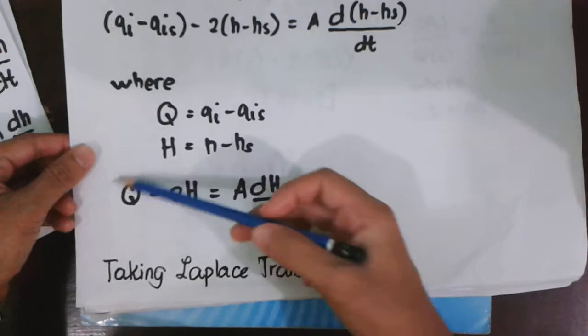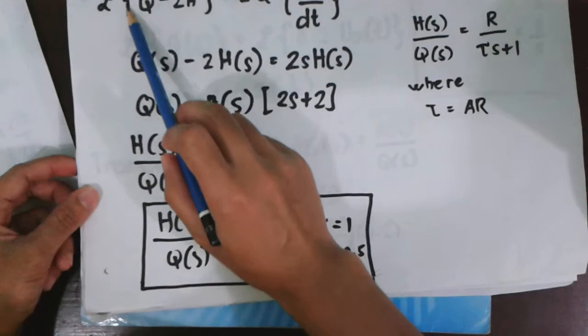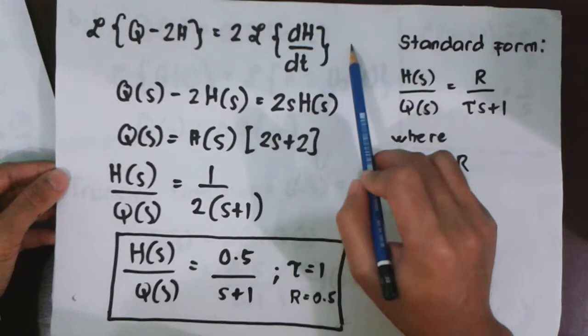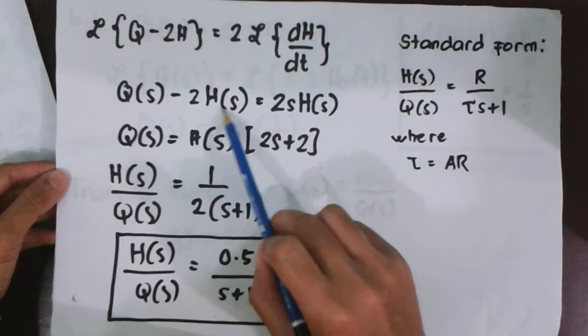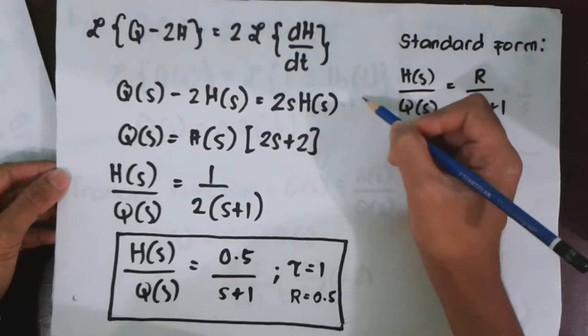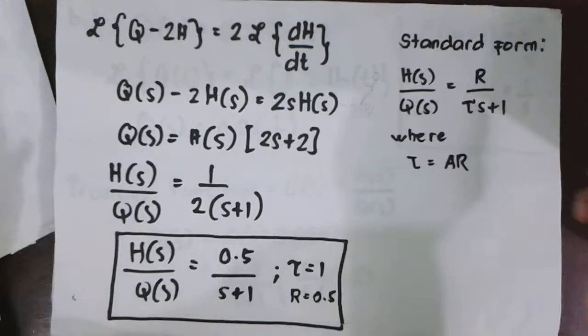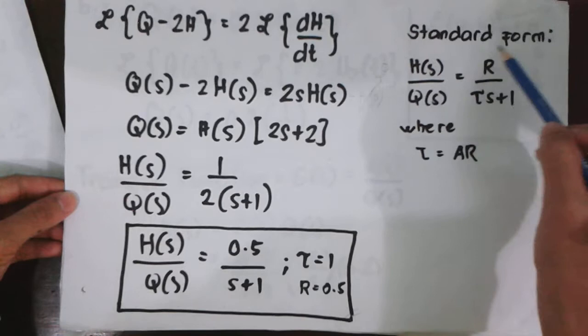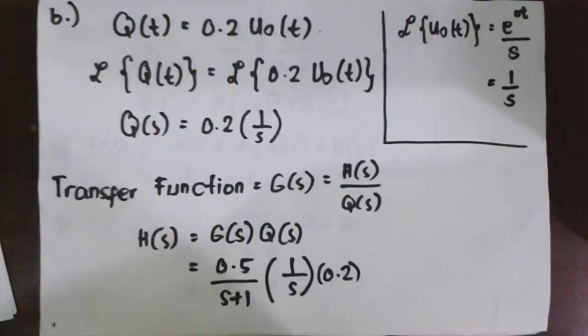Taking the Laplace transform with this equation, we arrive at this. The Laplace of Q minus Laplace of 2H is equal to 2 times Laplace of dH over dt. The Laplace of Q is equal to Q(s) and Laplace of H is equal to H(s). The Laplace of dH over dt is equal to s times H(s) minus H(0). Since H(0) is already equal to 0, we can eliminate it. And then, rearranging into the standard form of first order system, we obtain this transfer function.